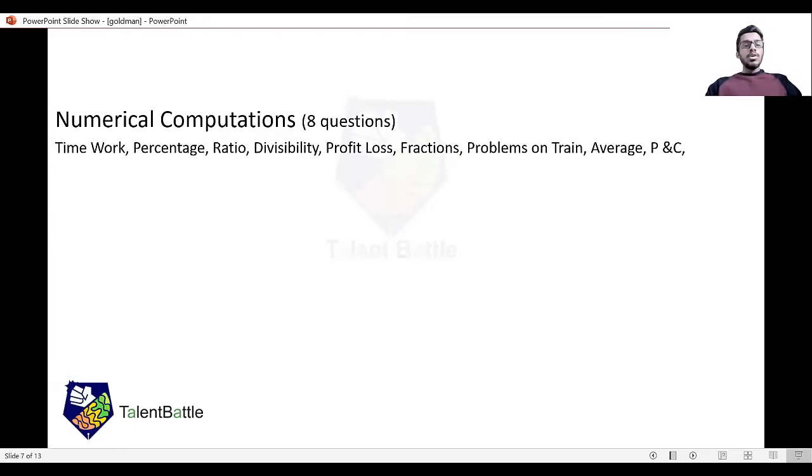In numerical computations, there were eight questions based on quantitative aptitude, which in general we know. The questions were based on time and work, percentage, ratio, divisibility rules, profit and loss, fractions, problems on trains, average, and permutation and combination. I think you're all familiar with these topics. We're going to make section-wise videos on all these topics for Goldman Sachs.